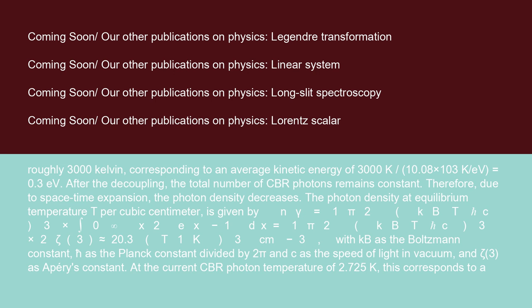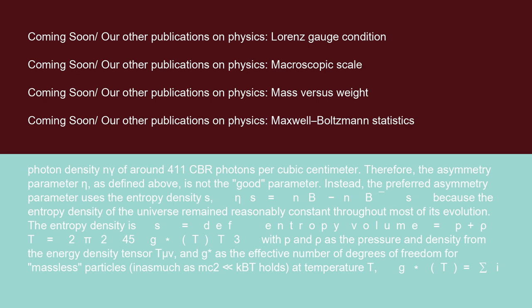The photon density at equilibrium temperature T per cubic centimeter is given by nγ = (1/π²)(kBT/ℏc)³ × ∫₀^∞ [x²/(eˣ-1)]dx = (1/π²)(kBT/ℏc)³ × 2ζ(3) ≈ 20.3(T/1K)³ cm⁻³, with kB as the Boltzmann constant, ℏ as the Planck constant divided by 2π, c as the speed of light in vacuum, and ζ(3) as Apéry's constant. At the current CBR photon temperature of 2.725K, this corresponds to a photon density nγ of around 411 CBR photons per cubic centimeter.